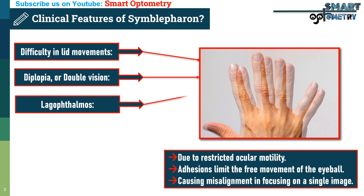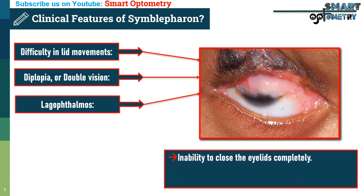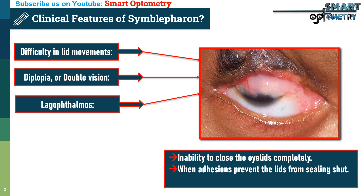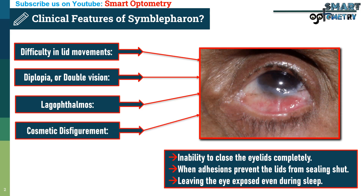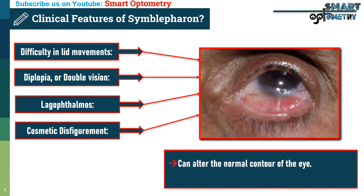3. Lagophthalmos: lagophthalmos is the inability to close the eyelids completely. This occurs when adhesions prevent the lids from sealing shut, leaving the eye exposed even during sleep. 4. Cosmetic disfigurement: the adhesions can alter the normal contour and symmetry of the eye, impacting the patient's appearance and self-esteem.